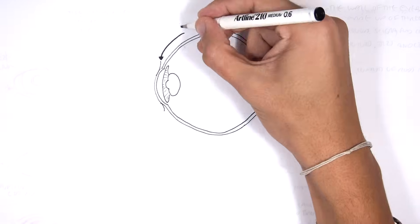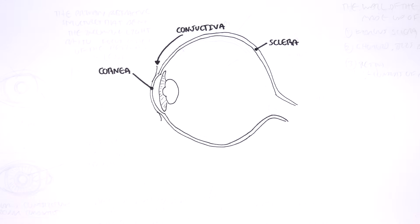We have the conjunctiva, the cornea. The cornea is on the same layer with the sclera, which is at the posterior end of the eyeball.